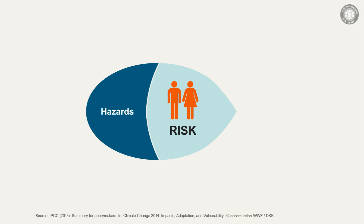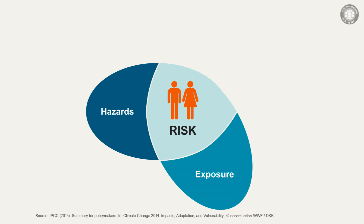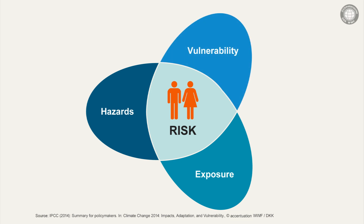First, there is the hazard aspect. A related question is: do certain climate changes occur at all? For example, is there a drought or a heat wave in a specific region? Second, there is the exposure aspect. The related question is: are people affected by this event at all? Third, there is the vulnerability aspect. The related question is: to what extent are people in a certain region affected by and vulnerable to a climate event?